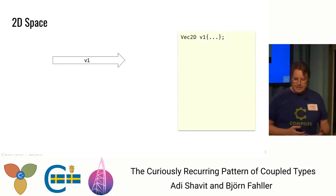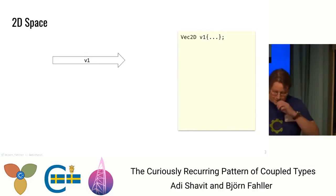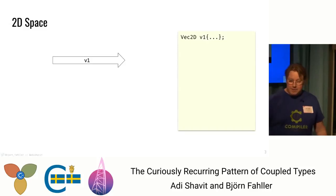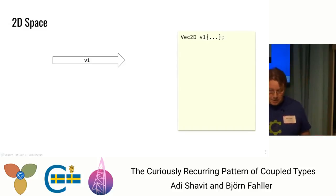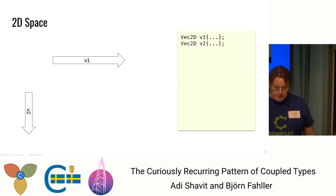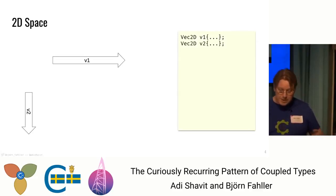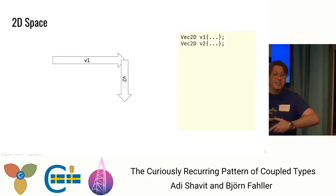We have a 2D space because it's so difficult to draw in 3D, especially when you're graphically handicapped as I am. We have a vector — a 2D vector, we call it V1. And we have another vector, V2, in this two-dimensional space. An important thing about vectors is that they have a direction and a length. They don't really have a position, but I have to draw them somewhere — we can slide them around, it doesn't matter, nothing has changed.